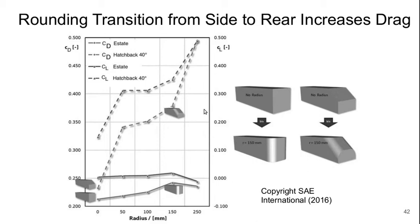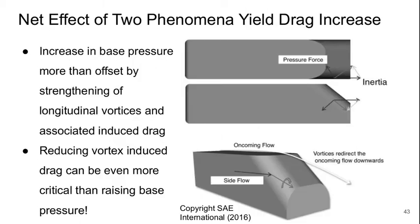Moving on, at the back of the vehicle past the window, rounding the transition from the sides to the rear perhaps surprisingly tends to increase drag. This is one reason you don't see large rounded rear ends on many vehicles. While pedestrian protection sometimes requires some rounding, overall a larger radius tends to increase the drag coefficient. The reason for this drag increase is the net effect of two phenomena: we get higher base pressure, but this is more than offset by the strengthening of longitudinal vortices due to the curved surfaces. So reducing vortex-induced drag can be more critical than raising base pressure.